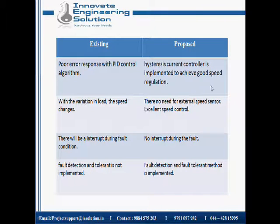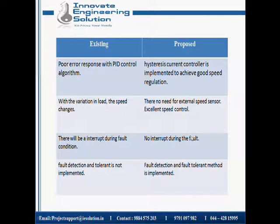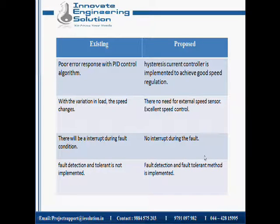With the hysteresis current control method, we have good speed regulation. When comparing to the existing system, when the load is varied, the speed also changes. But in the proposed system, even when the load is varied, the speed will be constant, and we are not having any external speed sensor. In the existing system, when a fault occurs, there will be an interrupt. But in the proposed system, even when a fault occurs, there is no interrupt.